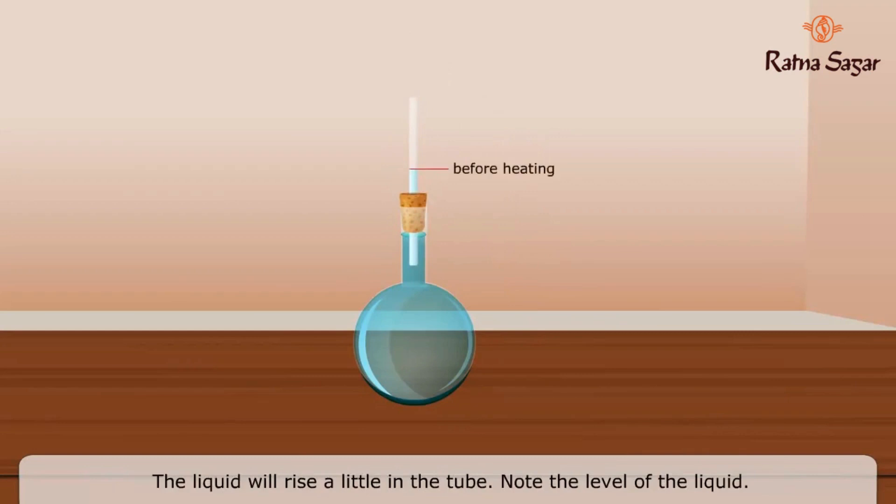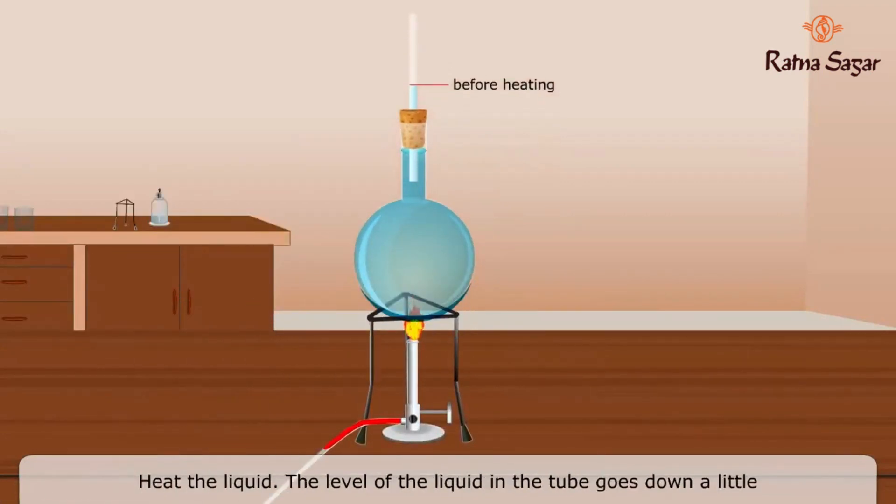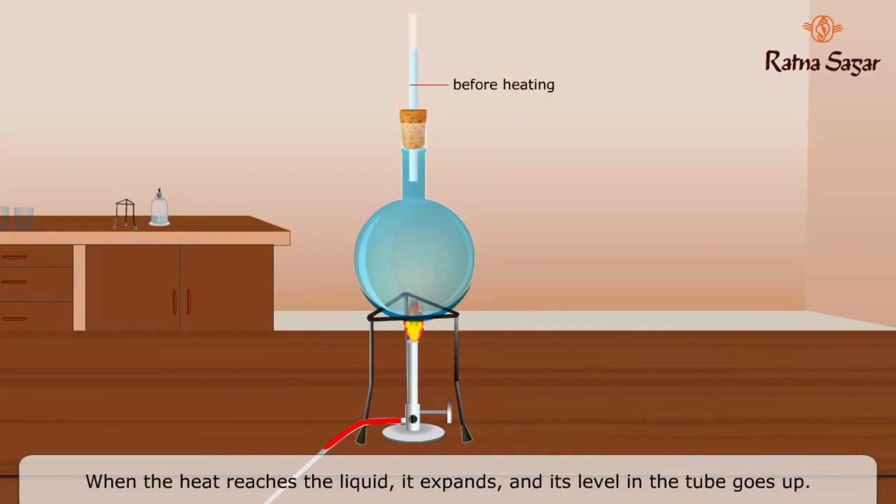The level of the liquid in the tube goes down a little and then starts rising. It goes down initially as the flask gets heated first and expands. When the heat reaches the liquid, it expands and its level in the tube goes up. Cool the liquid to normal temperature. The level will go down again.